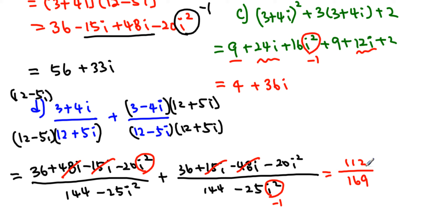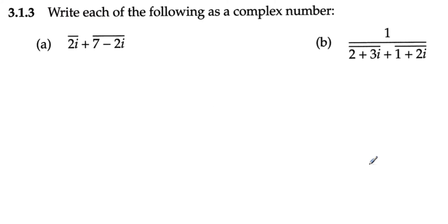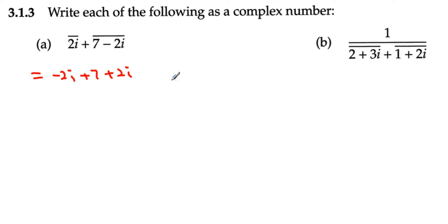Now let us move on to number 3. We just have to get the conjugate of each one and add them up. The conjugate of (7 minus 2i) gives minus 2i, and here plus 7 plus 2i. We just change the sign in the middle, and these two cancel out. Our final answer becomes 7.